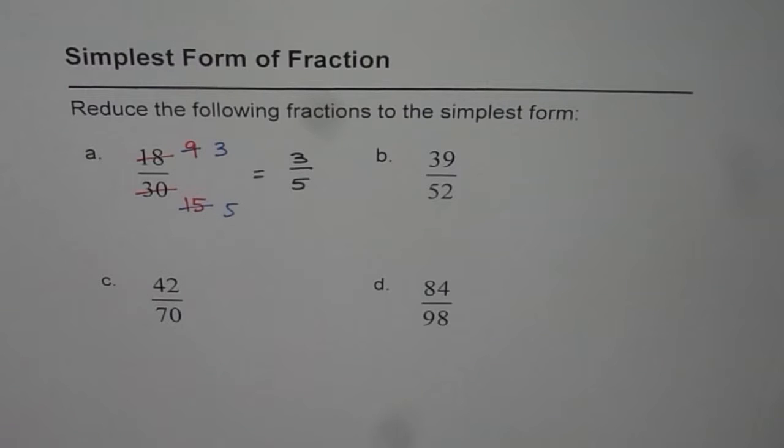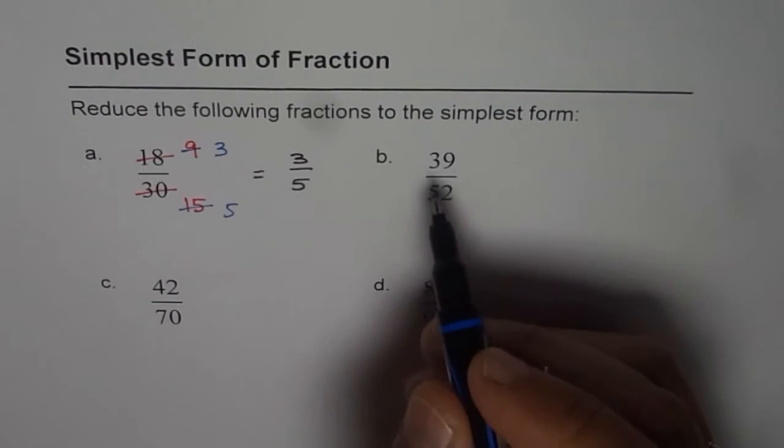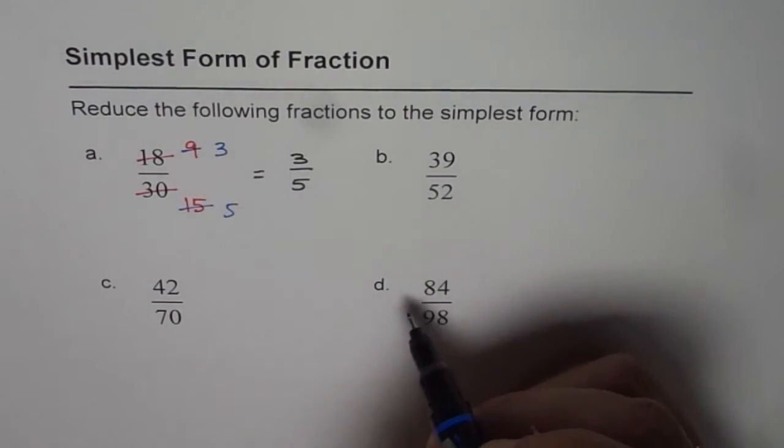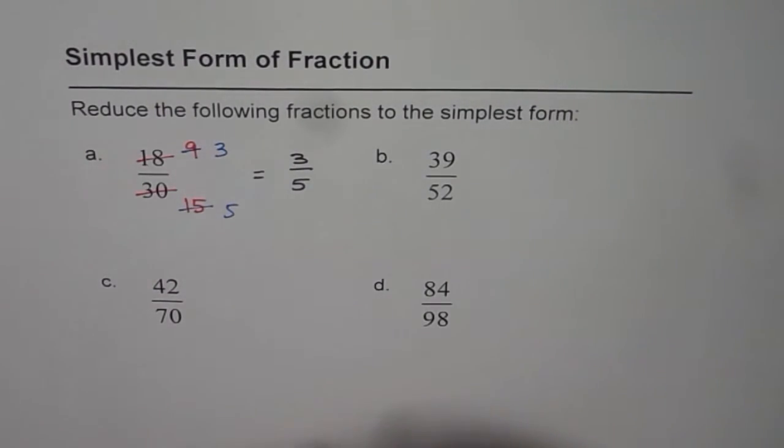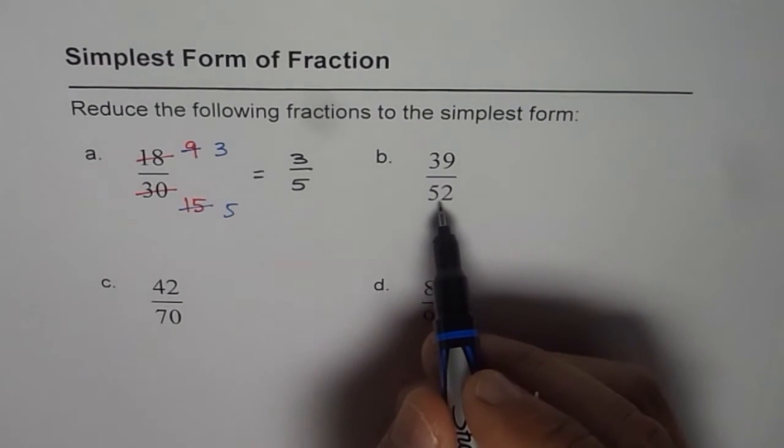Let me do one more and then I will leave the other 2 for you to do. 39 over 52. This is kind of difficult and that's why I took it. Now 39 over 52.